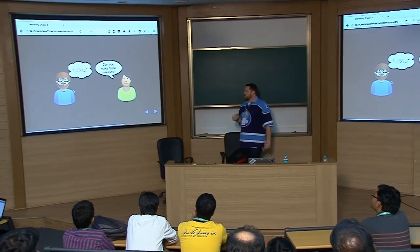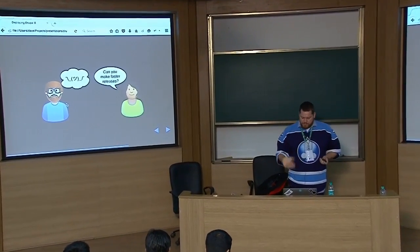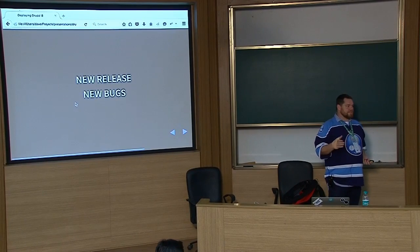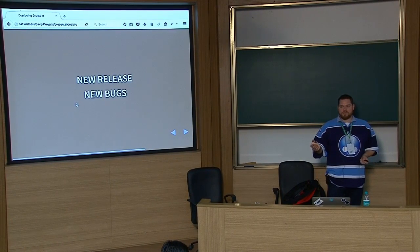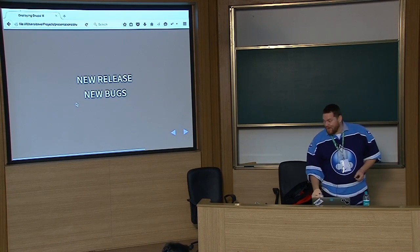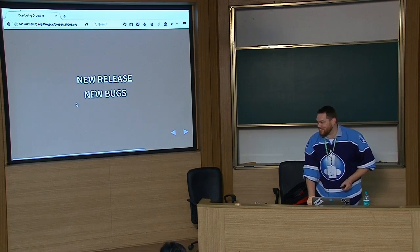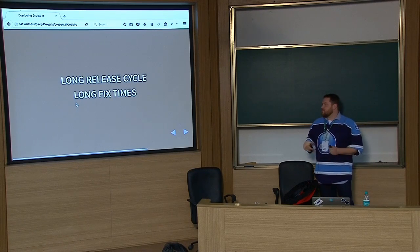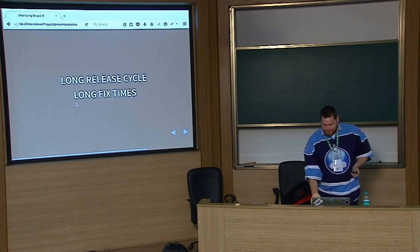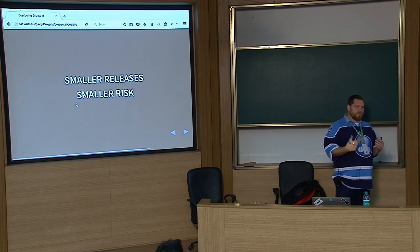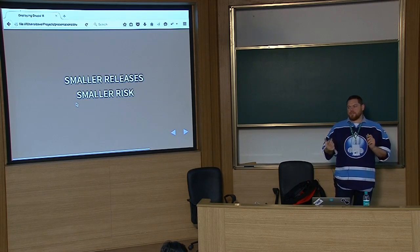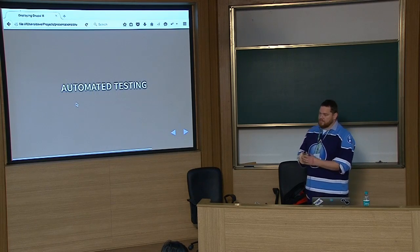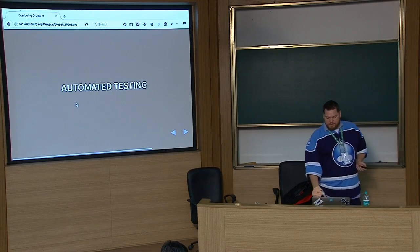Now Ada is asking, 'Can we make faster releases?' Gary's hesitant — every time they do a new release, there are new bugs. One of the issues with long release cycles is long fix times; it takes quite a while to get your fix through. Smaller releases have less risk because you're making fewer changes, and you can get fixes in faster. So what's it going to take to do more frequent releases? A really key thing is automated testing — using PHPUnit for your backend stuff and Behat for checking that the site behavior is as expected.